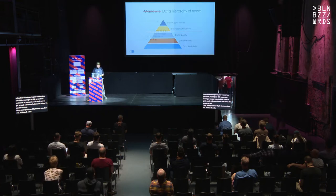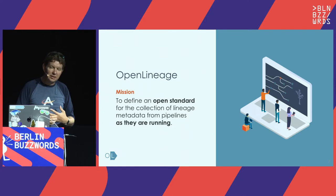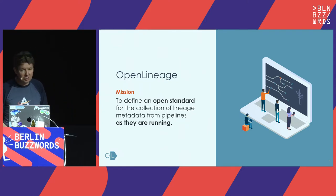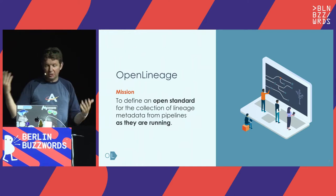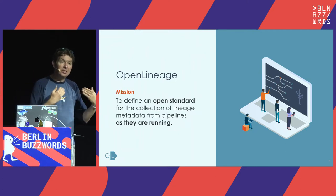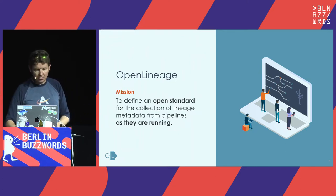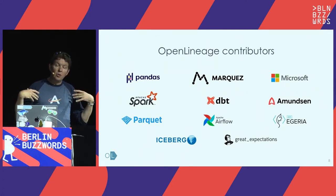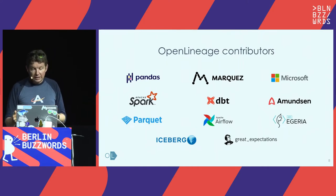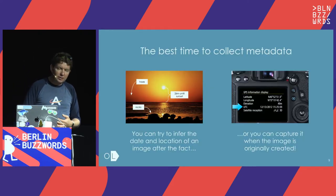The solution to this is OpenLineage — an open standard for collection of lineage metadata from pipelines as they are running. Not trying to infer lineage from other sources, but really inspecting and instrumenting data transformations as they're running. It was started by reaching out to a large community of projects in data and defining these standards on how we collect metadata and lineage together, because it's been a historically difficult problem.